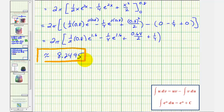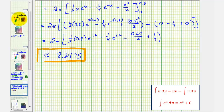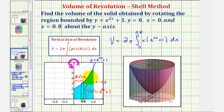Going back to the first slide, if we rotate this bounded region about the y-axis it would form this solid, and the volume of this solid is approximately 8.2495 cubic units. We found this volume using the shell method. I hope you found this helpful.